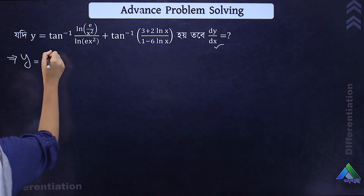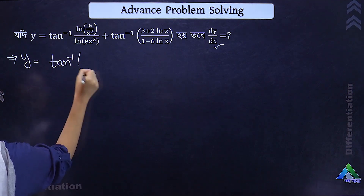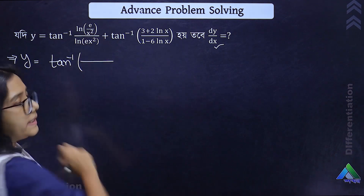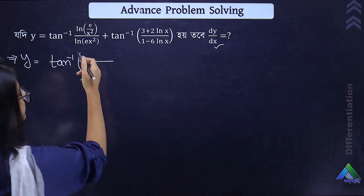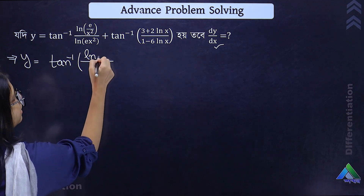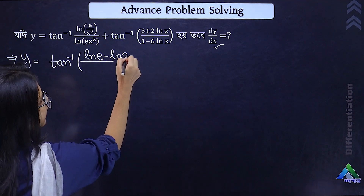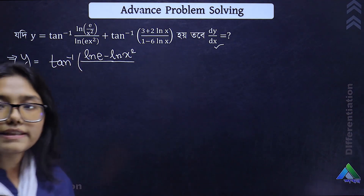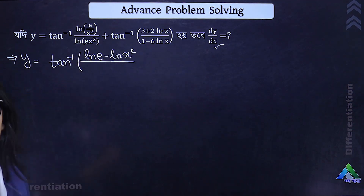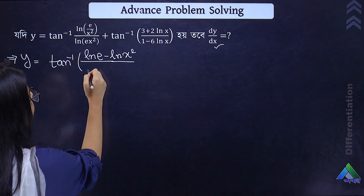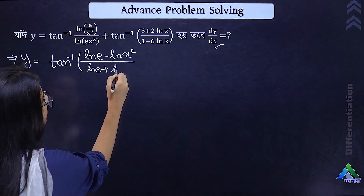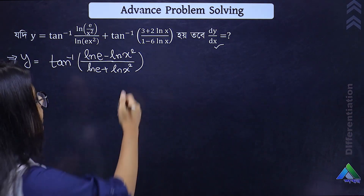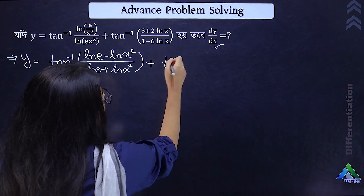Let's look at the first term: ln(e/x²) in the numerator. Using log rules, ln(e/x²) = ln(e) minus ln(x²) = 1 minus 2 ln x. Similarly, in the denominator, ln(e·x²) = ln(e) plus ln(x²) = 1 plus 2 ln x.